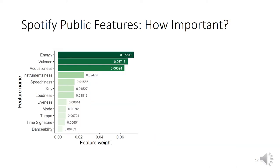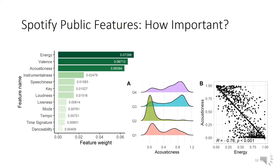Regarding feature relevance, three of them clearly stand out: energy, valence, and acousticness, which empirically seems logical. A more in-depth analysis shows that an acousticness near zero — that is, more electronic sounds — is much more common in happy or tense music, which also means music with high energy. Thus, a high negative correlation between energy and acousticness features was verified.